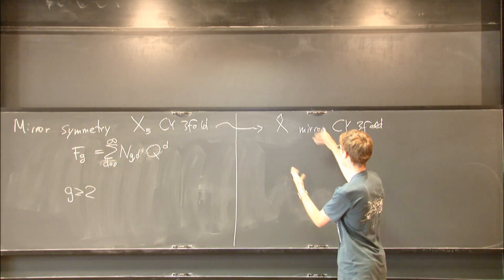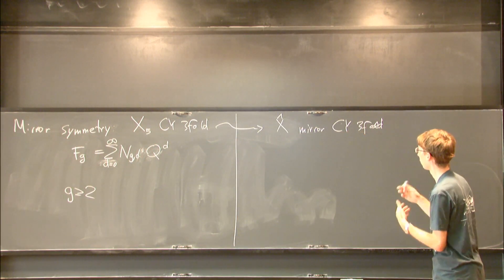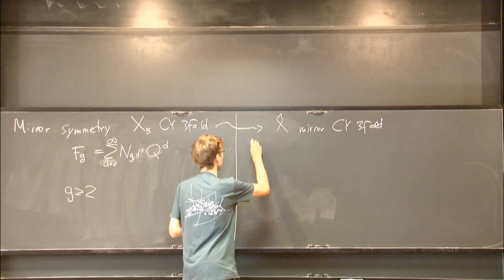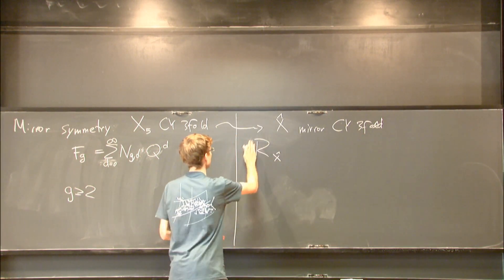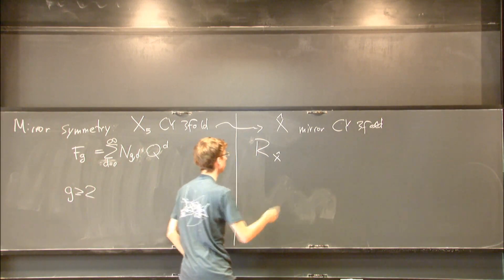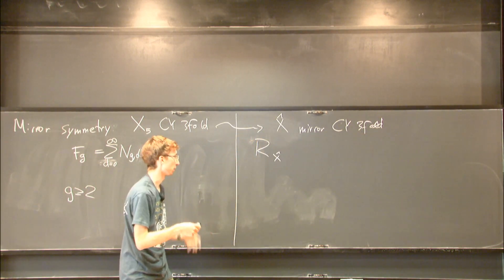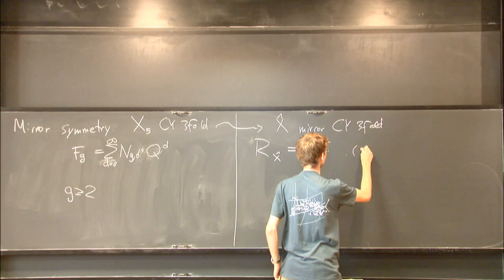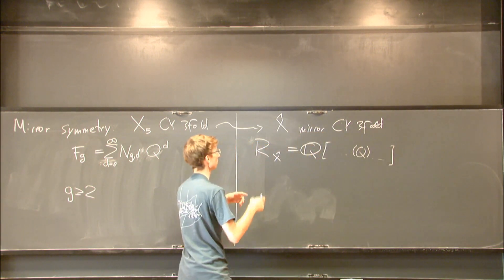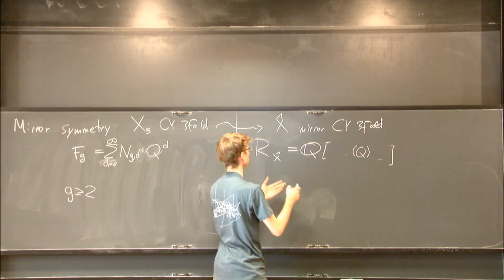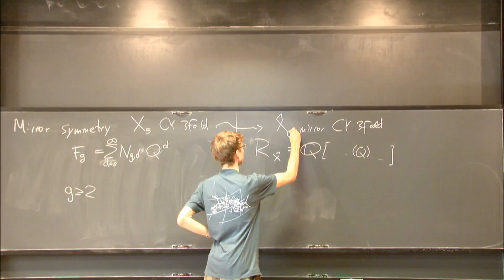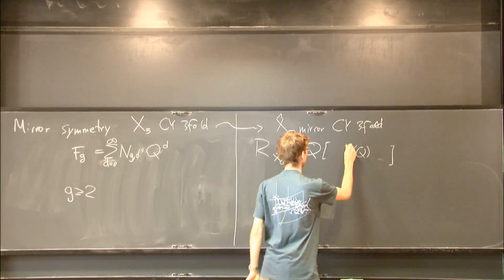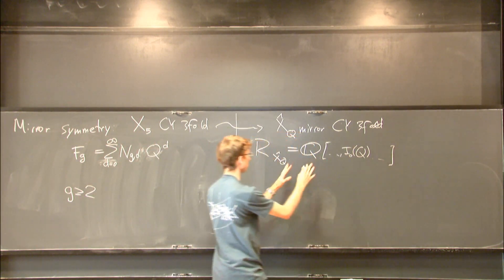On the other side, on the mirror, it's supposed to be related to things like variation of Hodge structure, Picard-Fuchs differential equations. You can cook up an object out of the mirror, which is a ring of period integrals. It's a polynomial ring - there are finitely many generators. Each generator depends on a variable Q, because the mirror quintic is actually not just one Calabi-Yau threefold, but a whole family of them. You get integrals that depend on a parameter Q.